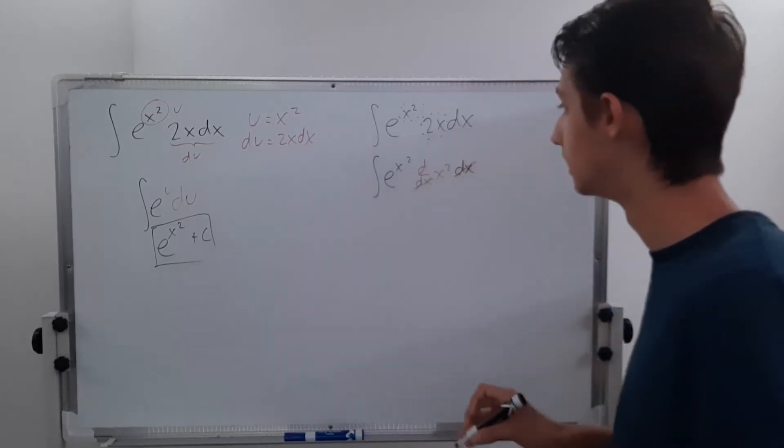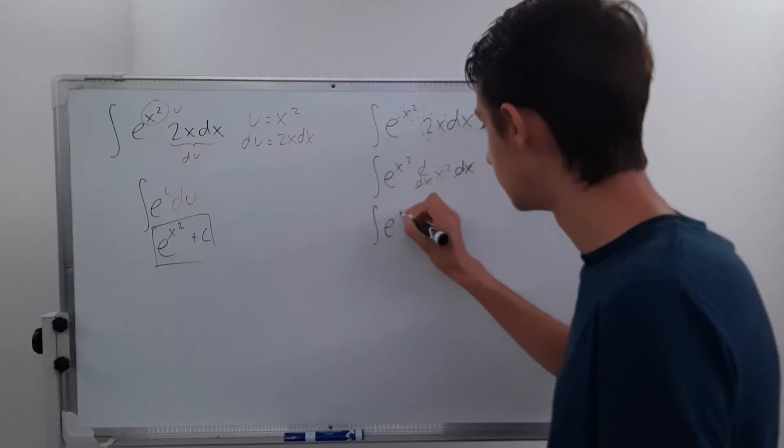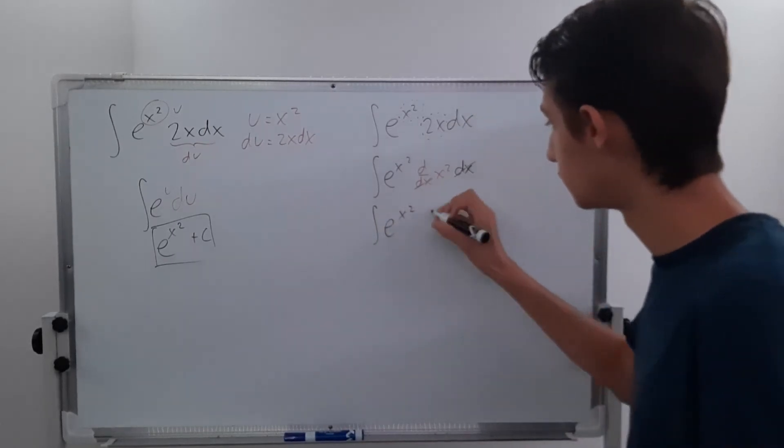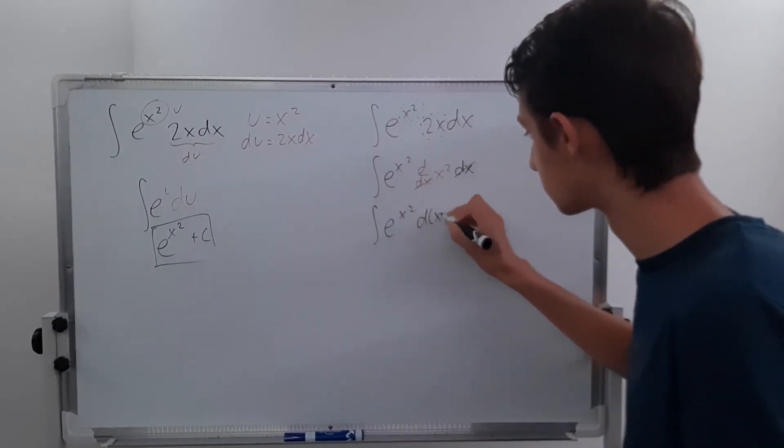And what this does is it allows us to cancel out these dx's, and we're left with e to the x squared times d of x squared.